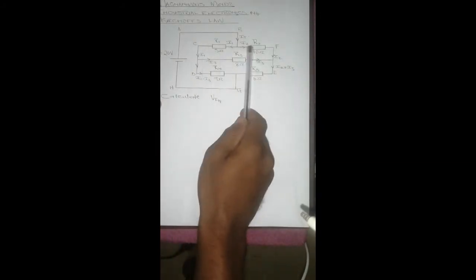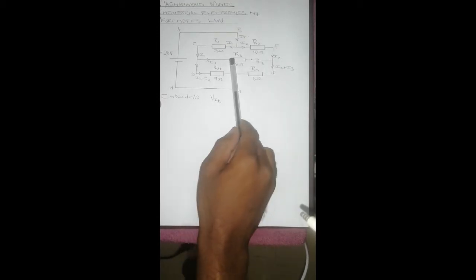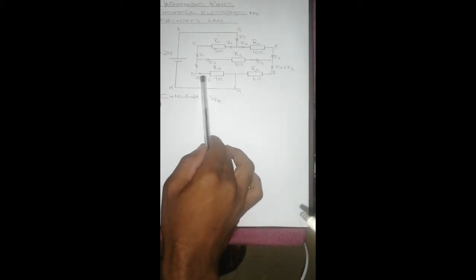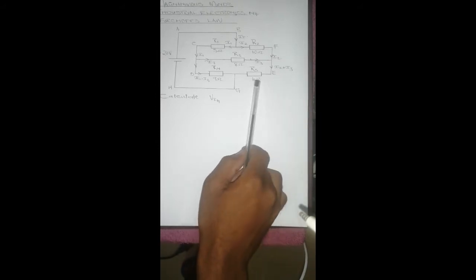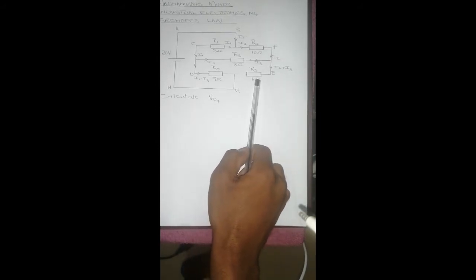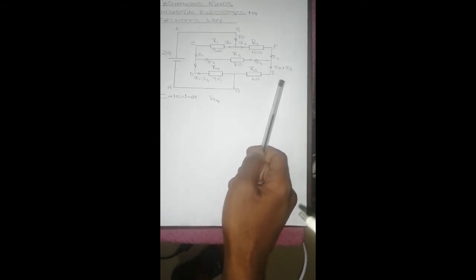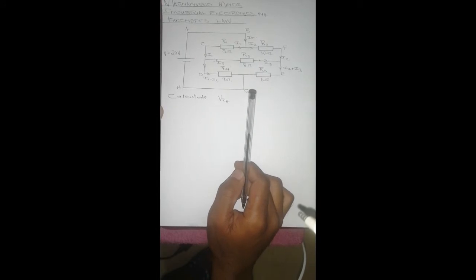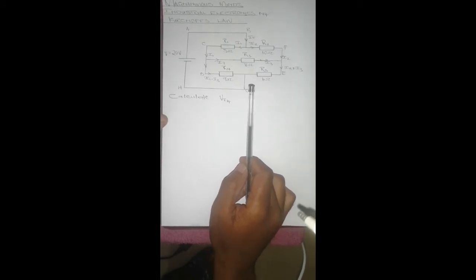This is the current switch: we have I1 going through R1, I2 going through R2, and then I3 going through R3. And then the one that's going through R4 is going to be I1 minus I3, and the one going through R5 is going to be I2 plus I3. After doing so, what we have to do now is to set up our loops.